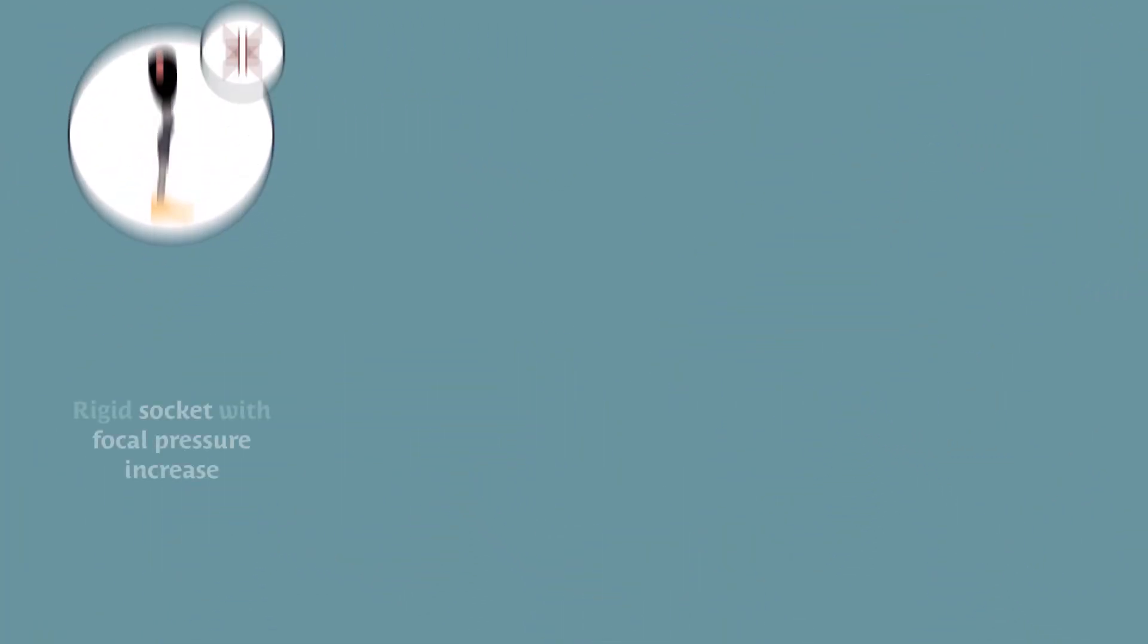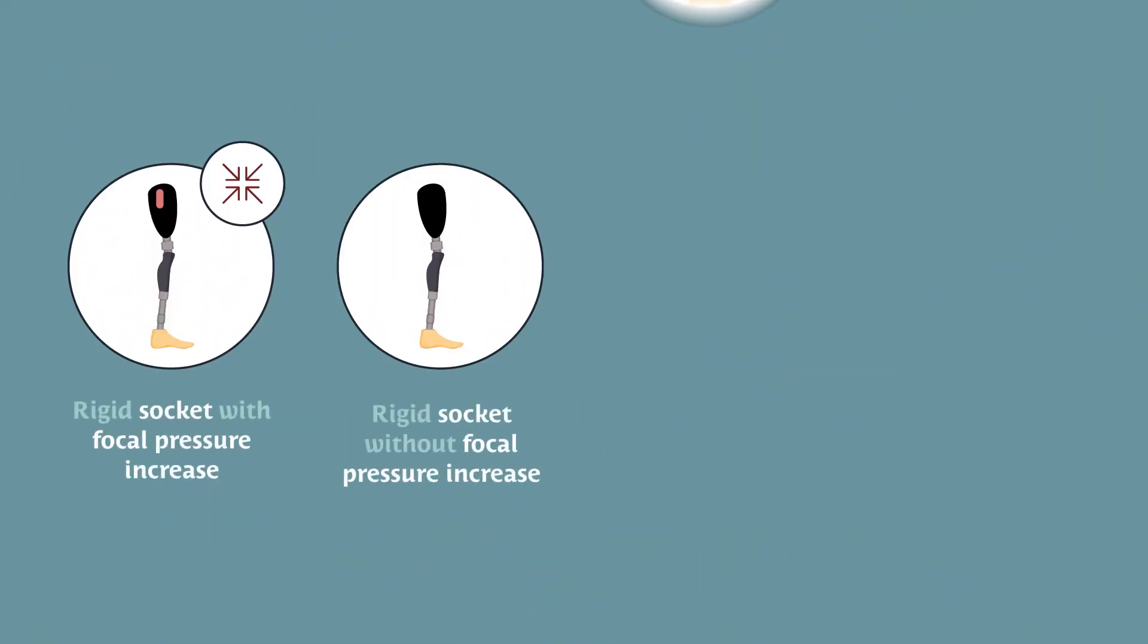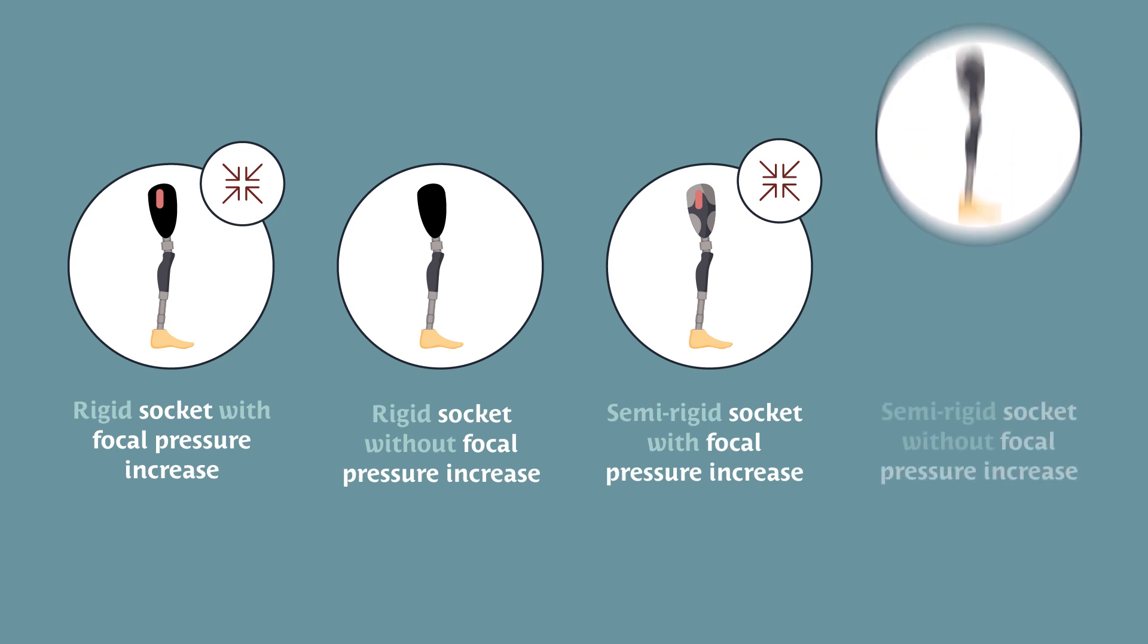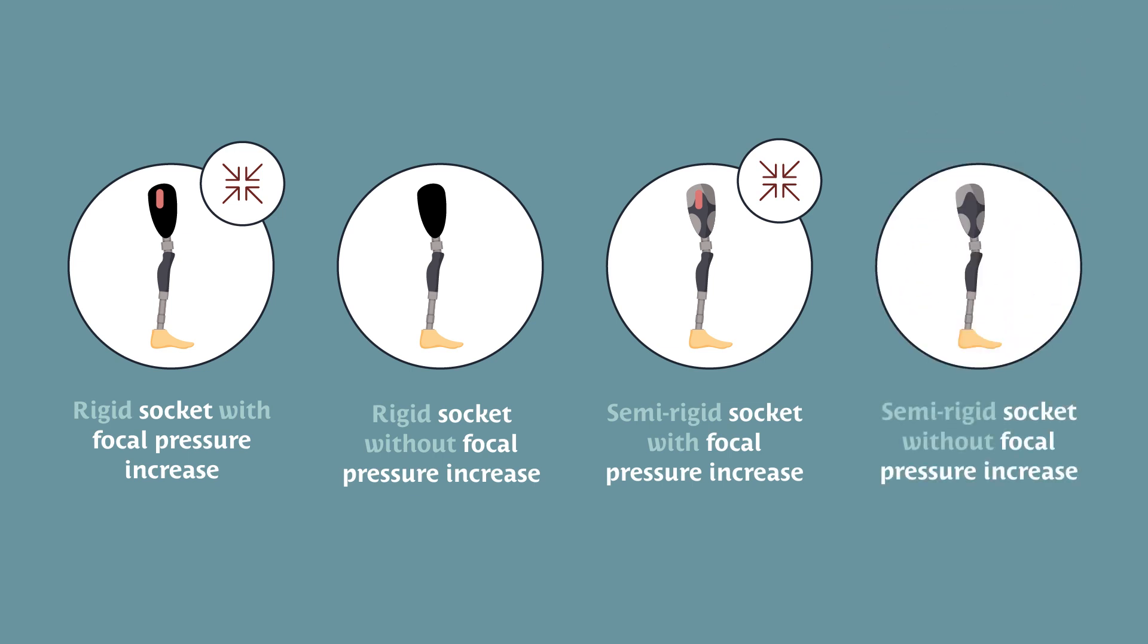They did this under four different prosthetic interface conditions: a rigid and a semi-rigid socket, each one with and without a focal pressure increase on a specific area of the residual limb.